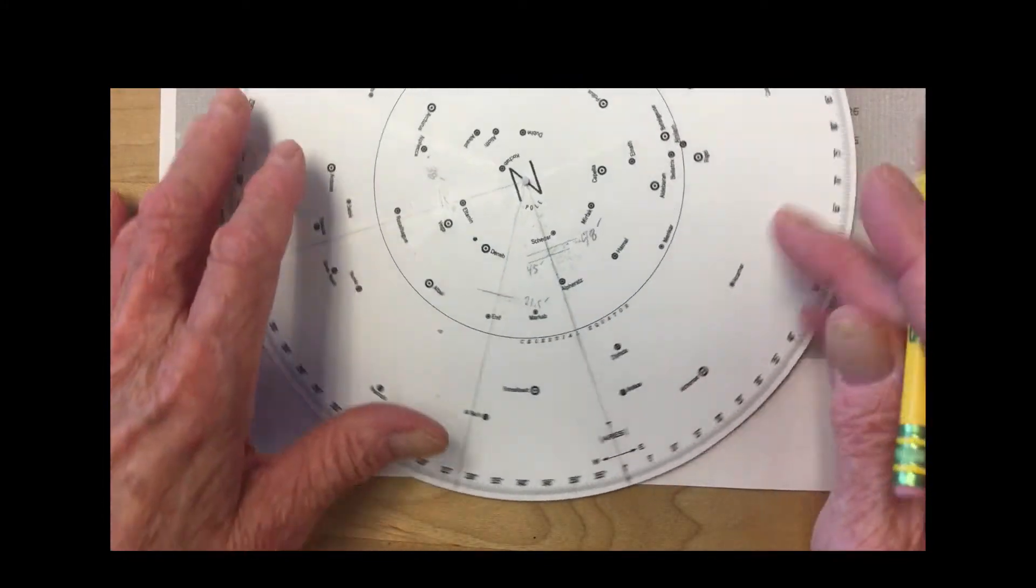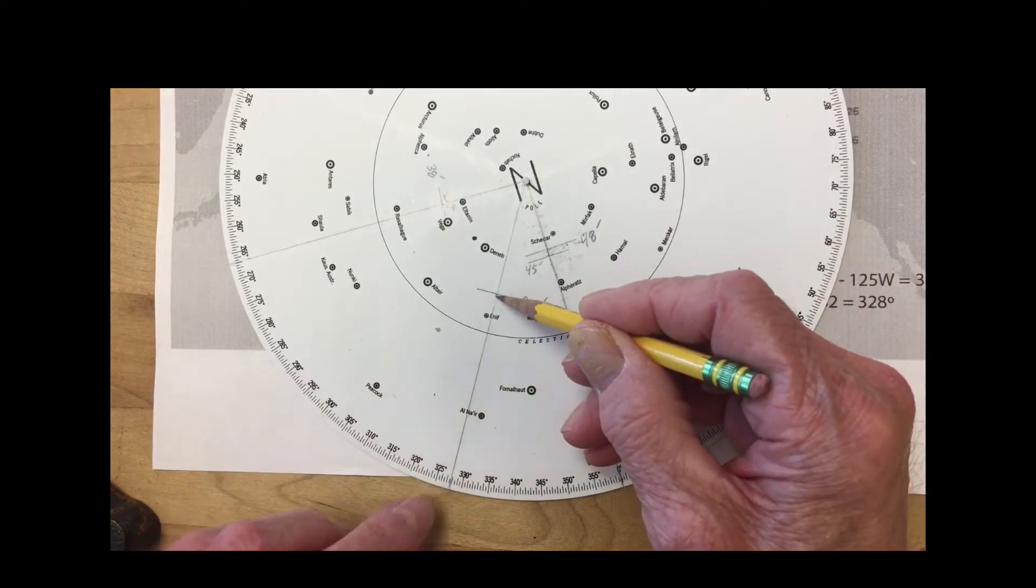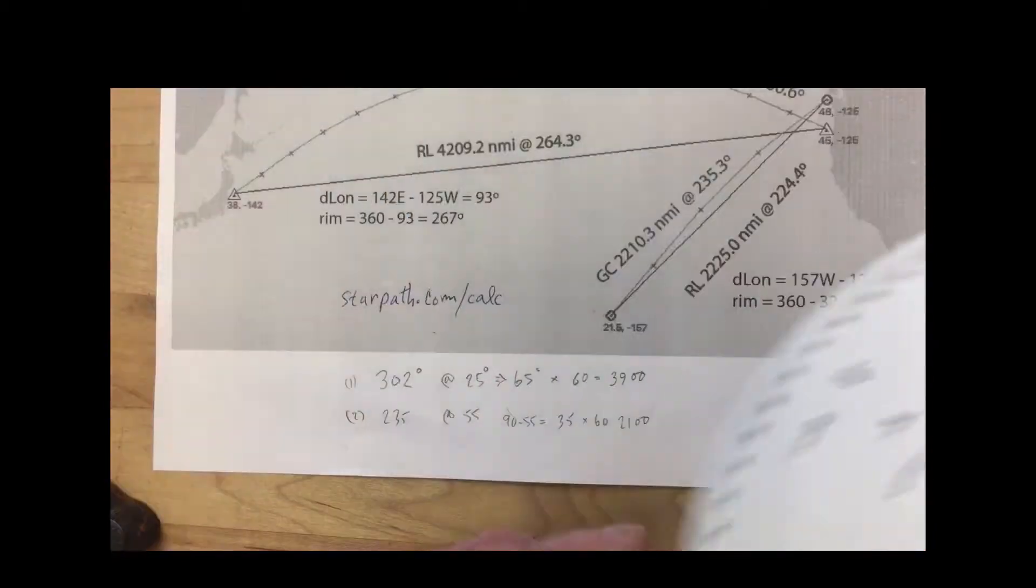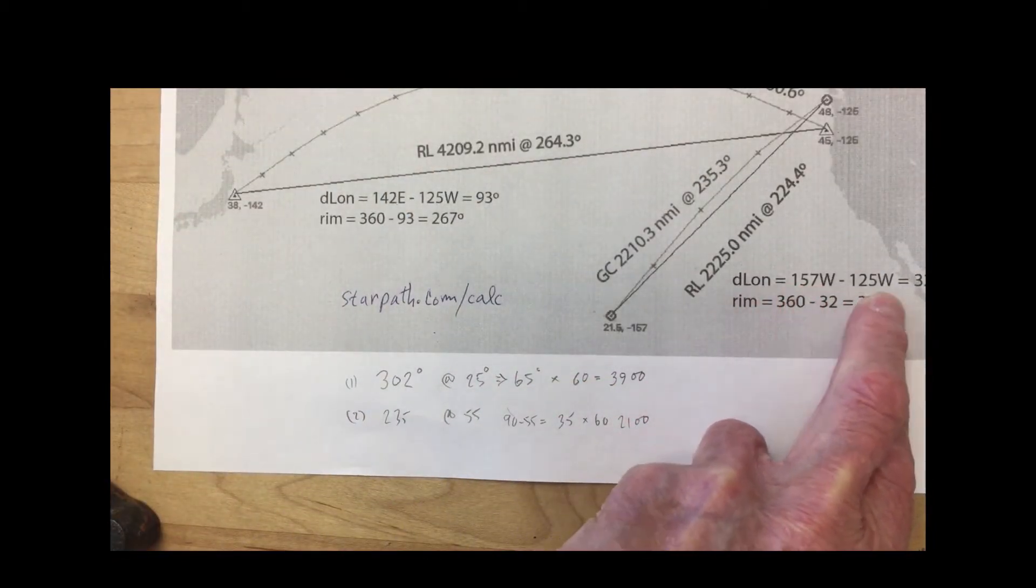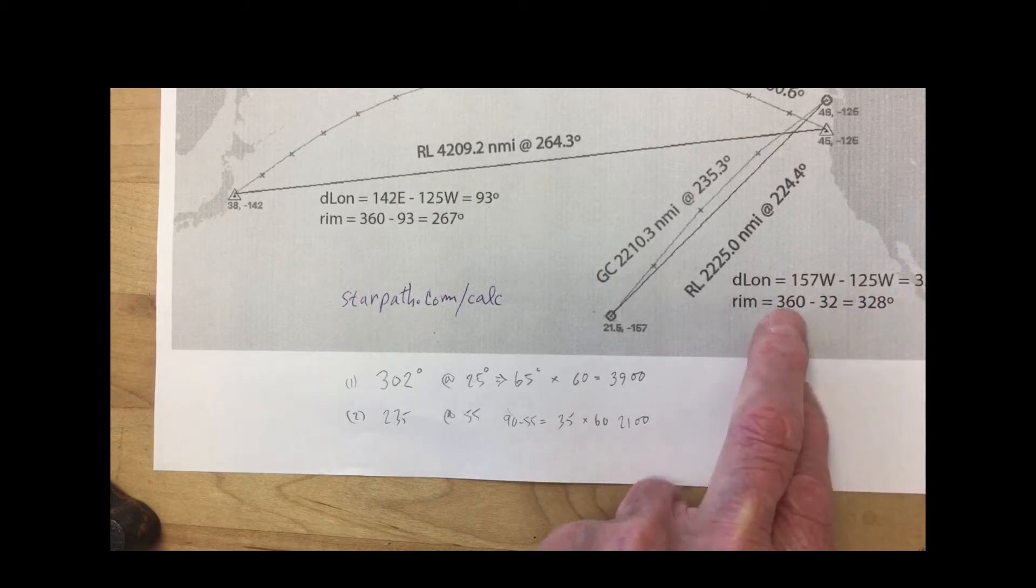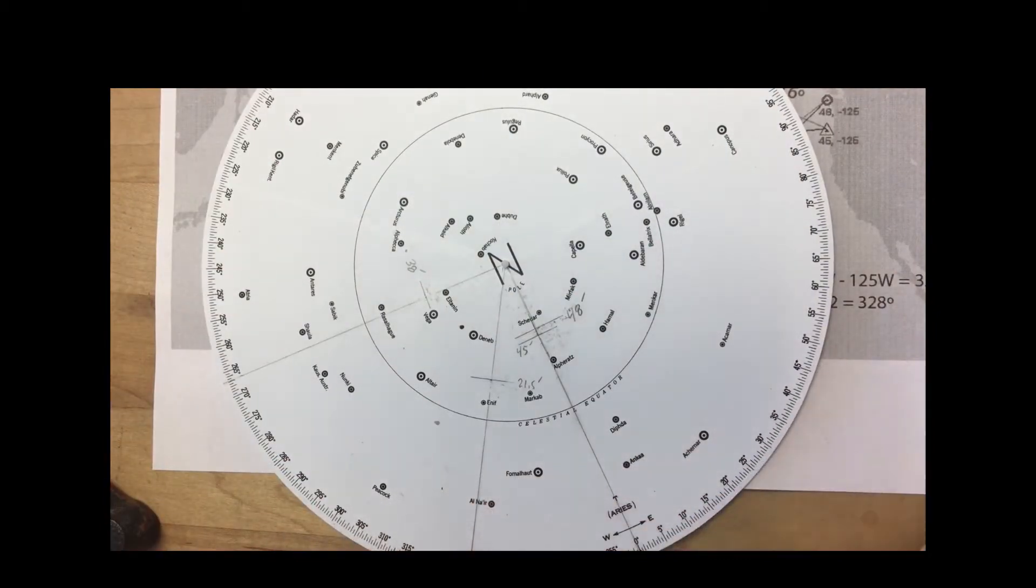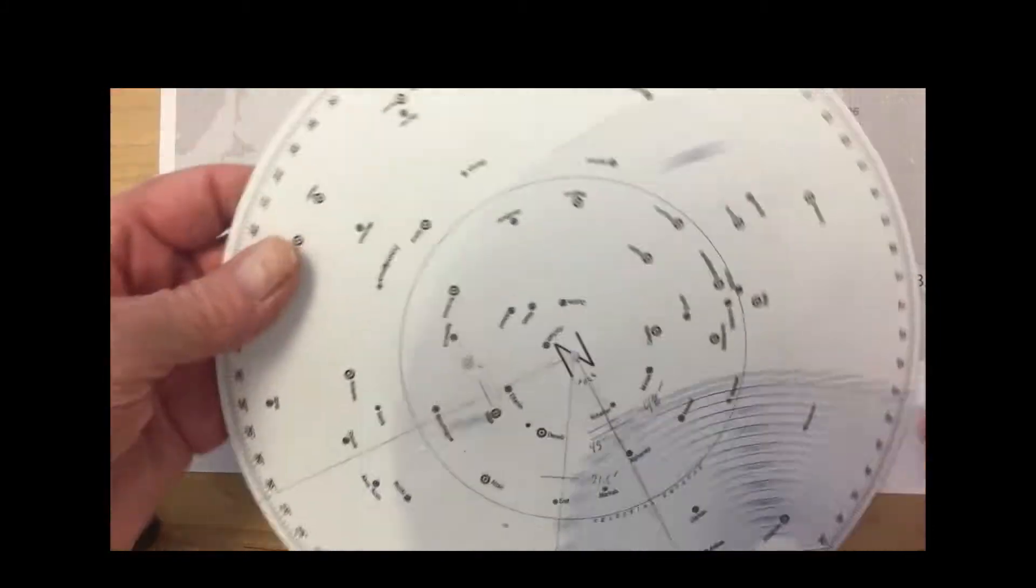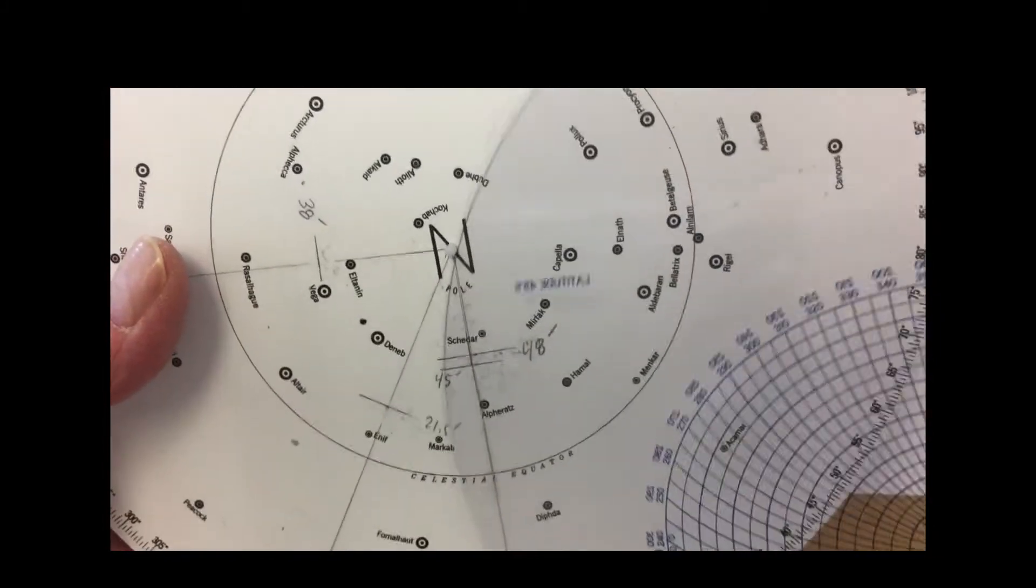And then the other is plotted the same way. That one's starting at 48 and it's going down to 21, and it's at 328. You see here we have a D longitude: 157 to 125 is 32, 360 minus 32 is 328. So these are the two examples set up here.